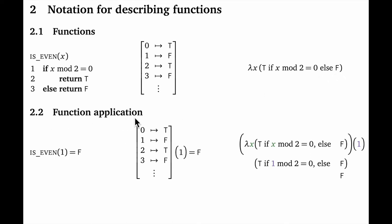Building on the above, we now turn to the concept of function application — this is where we actually use the functions to compute something. You've probably seen the programming notation on the left: we feed in one, and the output was f for false. In the middle we use the same parenthesis notation, but it's more like a lookup: one comes in, we find it in the domain, and get back whatever that input is associated with. Lambda notation is similar. I've put the function in outer parentheses to make clear the entire function takes an argument. The argument comes in, we change all occurrences of x in the body to that value, and then run the resulting code — all of this boils down to a return value of f for false.